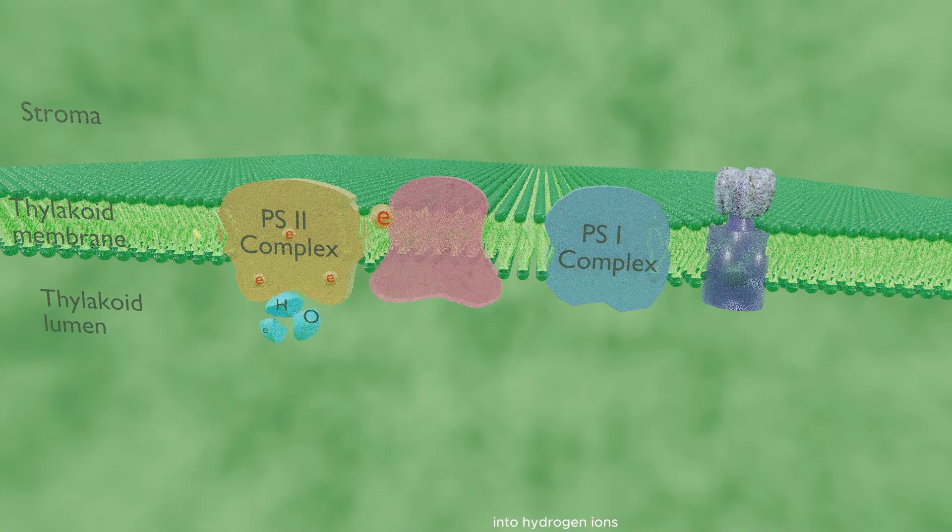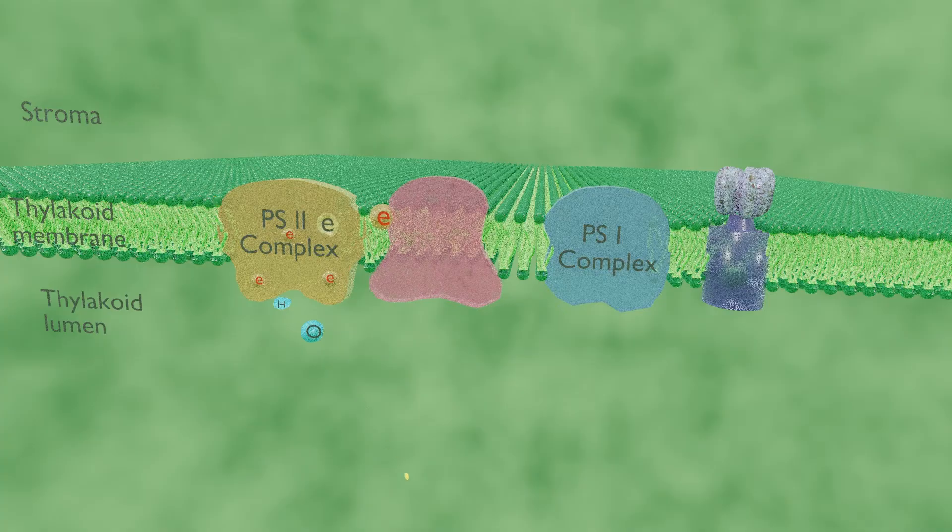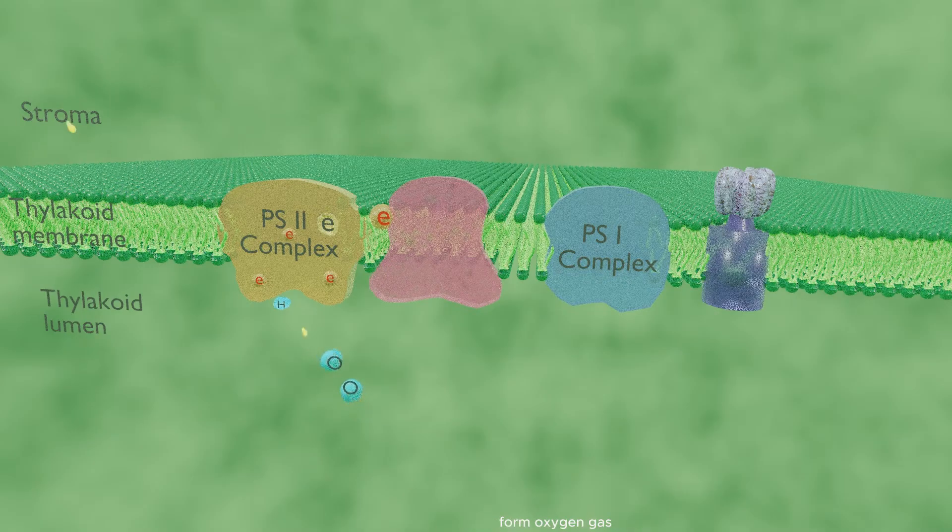molecules into hydrogen ions, electrons, and oxygen atoms. This process is known as photolysis, which means splitting by light. The electrons replace those originally lost from chlorophyll. The oxygen atoms, however, form oxygen gas which is a waste product of photosynthesis released in the atmosphere.